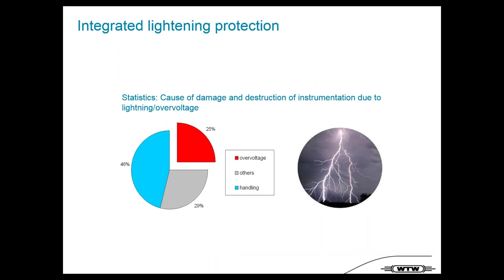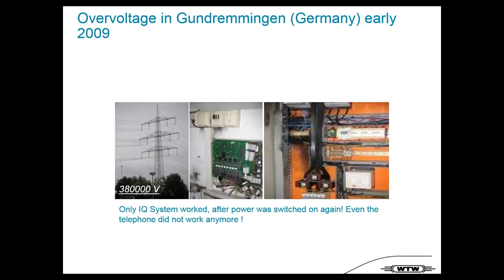One feature unique to measurement systems in our area is integrated lightning protection. Statistics show around 25% of defective instruments are damaged by lightning and overvoltage. We have integrated protection for this. A real-world example: 10 years ago in Germany, a high-power line dropped onto a wastewater treatment plant. Every digital system — telephone, PLC — was destroyed, but IcoSensorNet worked again as soon as power was restored. It's real overvoltage protection.